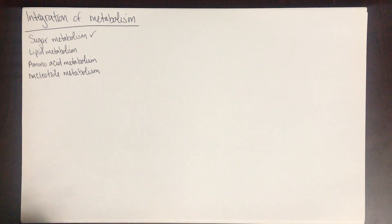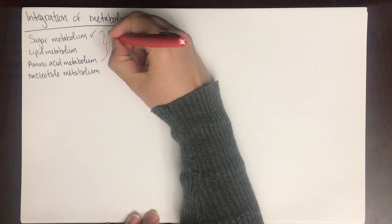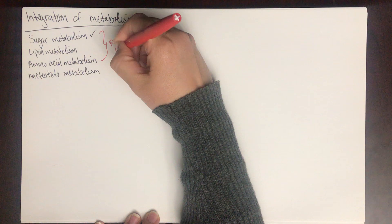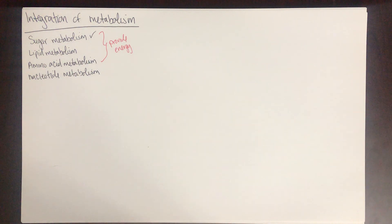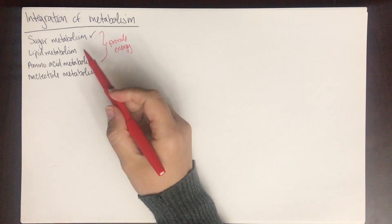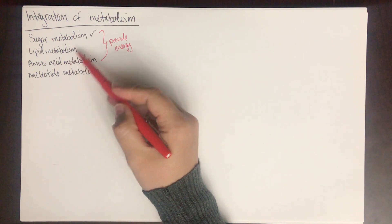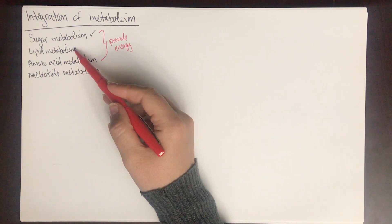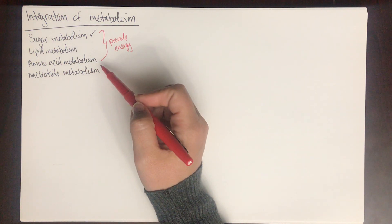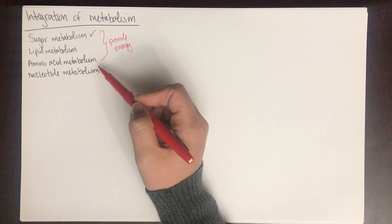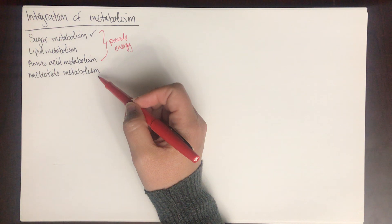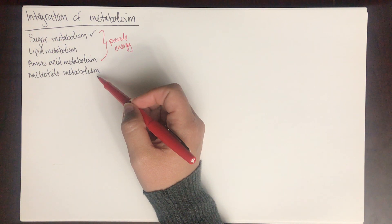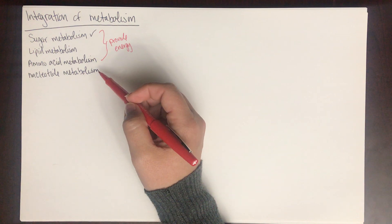These are the four classes of macromolecules. Remember, way back in the beginning, we said that only three of these provide energy. We've talked about sugar metabolism and the amount of ATP we can get out of one molecule of glucose. In the next few chapters, we'll talk about lipid metabolism using fatty acids as energy, amino acid metabolism where we break apart skeletal muscle for energy, and nucleotide metabolism — how we make the nucleotides in our DNA and RNA, but we do not use those for energy.